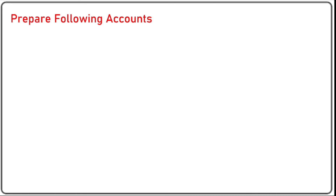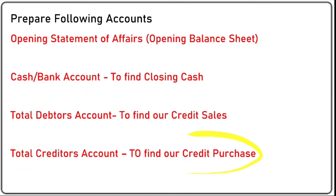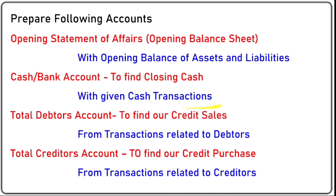Now we have to prepare some accounts. First: opening statement of affairs, to prepare the opening balance sheet. Second: cash and bank account, to find out closing cash. Third: debtors account, to find out credit sales. Fourth: creditors account, to find out credit purchase. These are the four accounts we need to prepare to convert single entry into double entry. The opening balance sheet can be prepared with the help of opening balances of assets and liabilities given in the example.